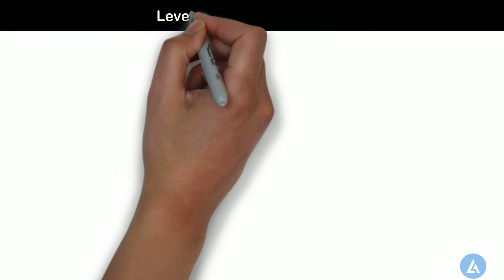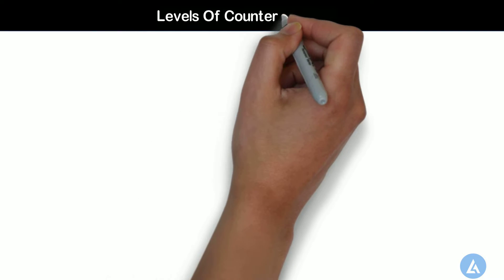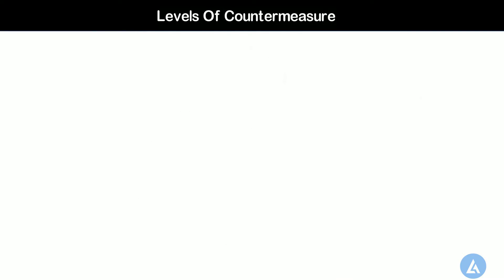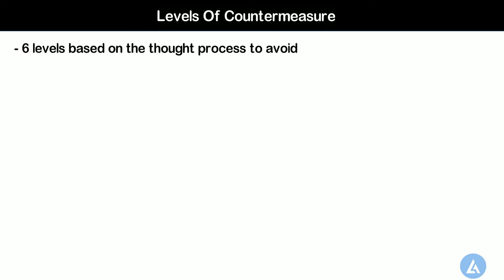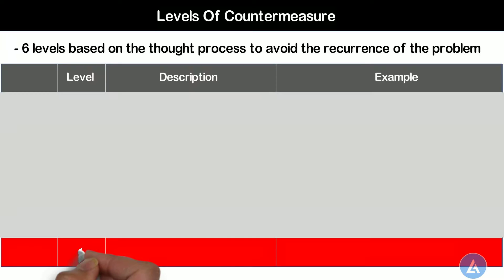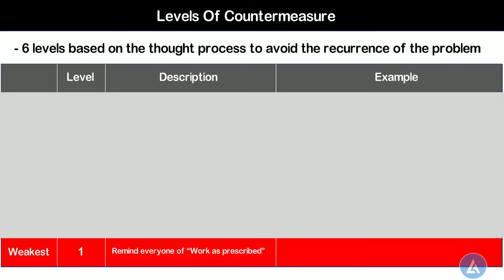Now let's understand what are the various levels of countermeasures. There are six levels of countermeasures based on the thought process involved to avoid the reoccurrence of the problem. Level 1: Remind everyone of work as prescribed. This is considered the weakest level of countermeasure.